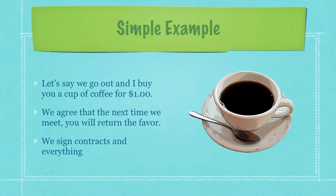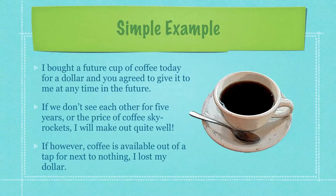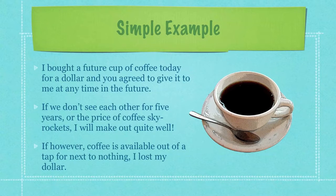Here's a simple example. Let's say we go out and I buy you a cup of coffee for $1, and we agree that the next time we meet you will return the favor. We sign contracts — real serious situation. So what I did was I bought a future cup of coffee today for $1 and you agreed to give it to me at any time in the future. If we don't see each other for five years or the price of coffee skyrockets, I will make out quite well. If however coffee is available out of the tap for next to nothing, I've essentially lost my dollar.